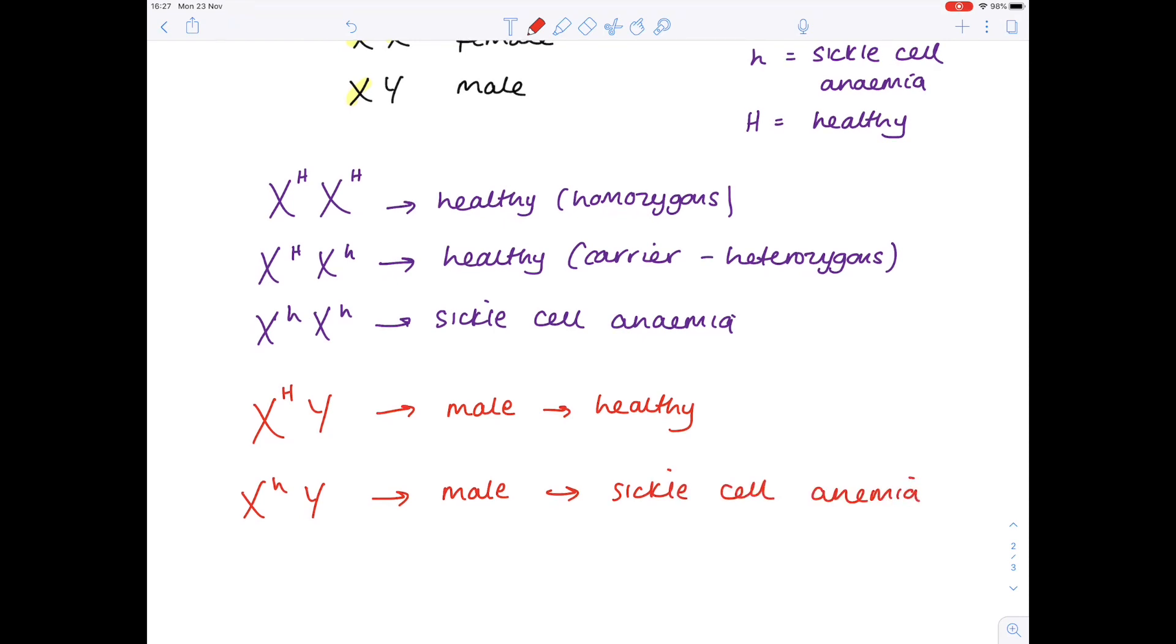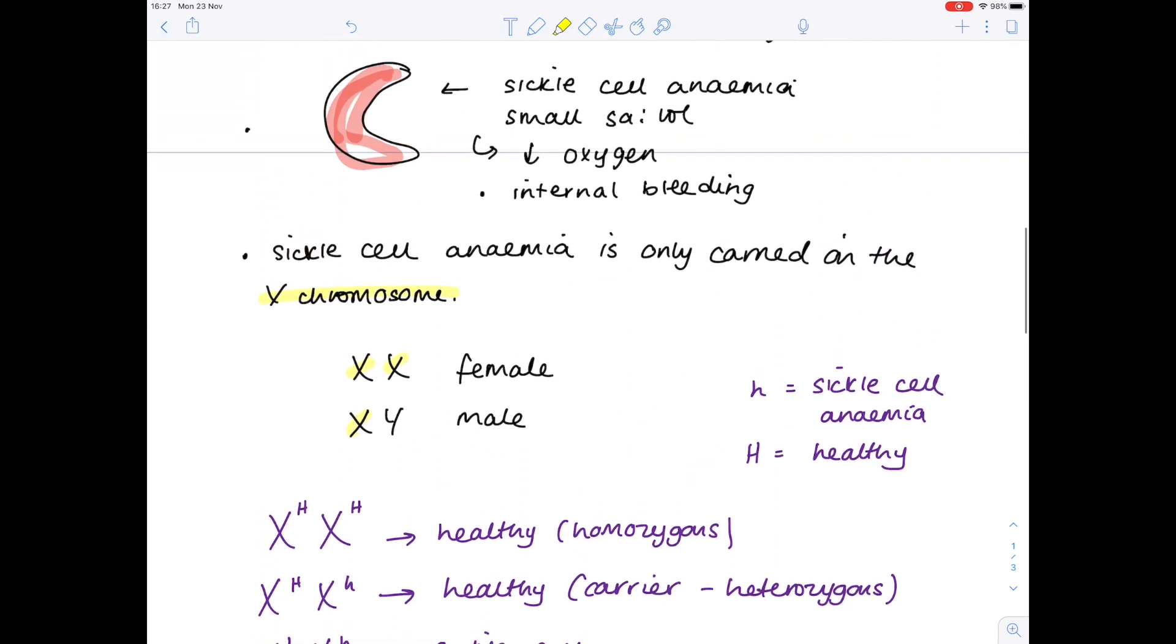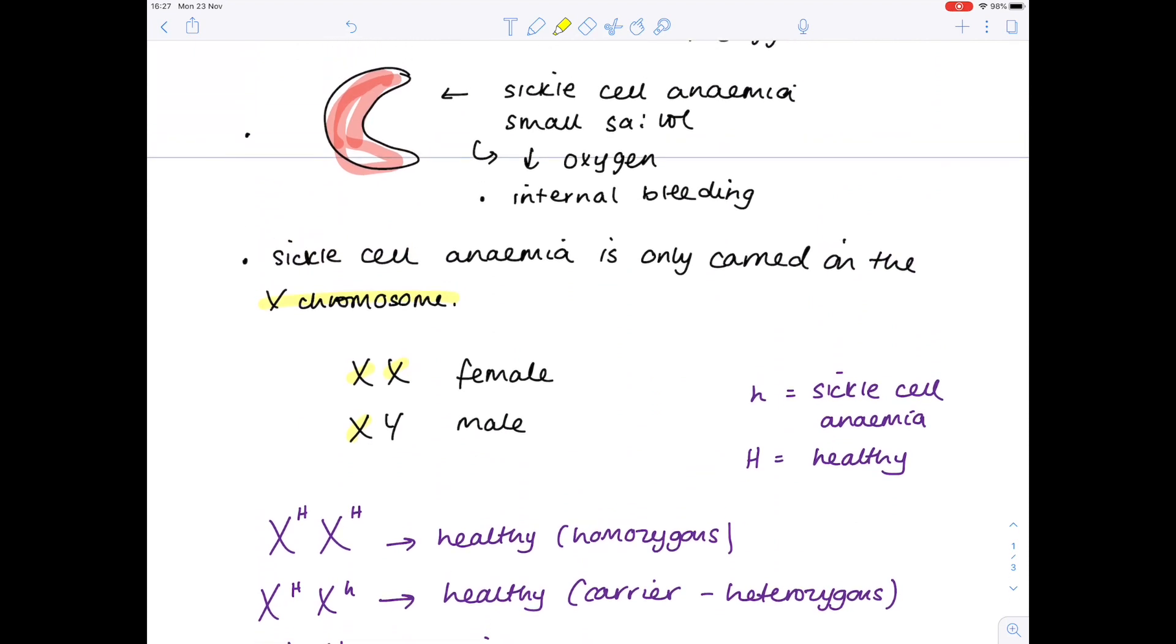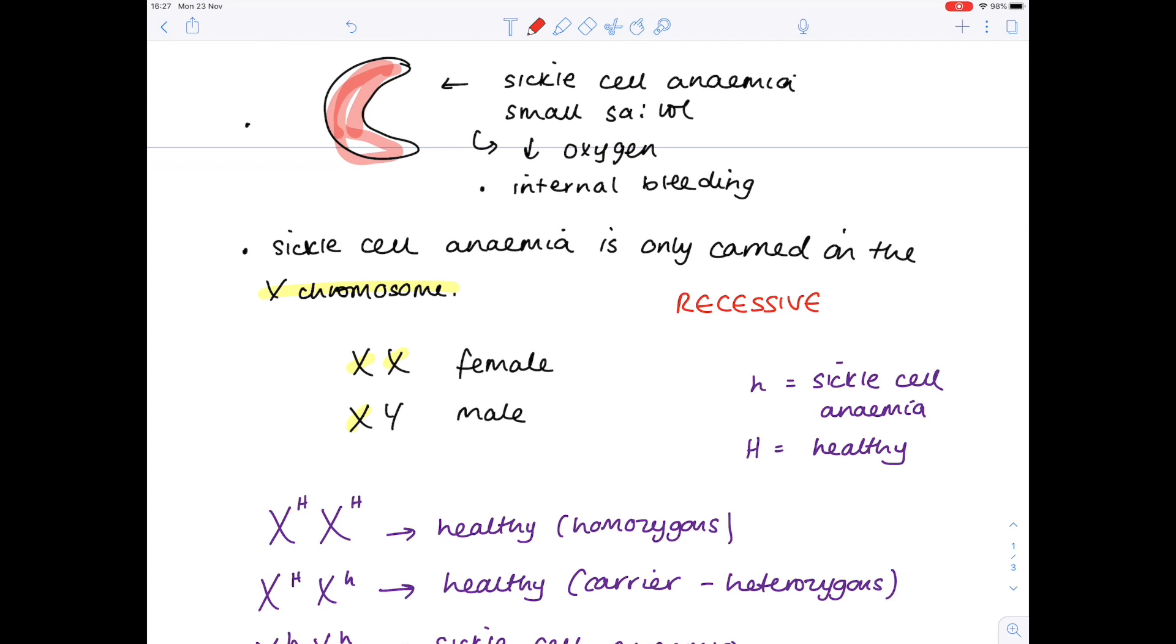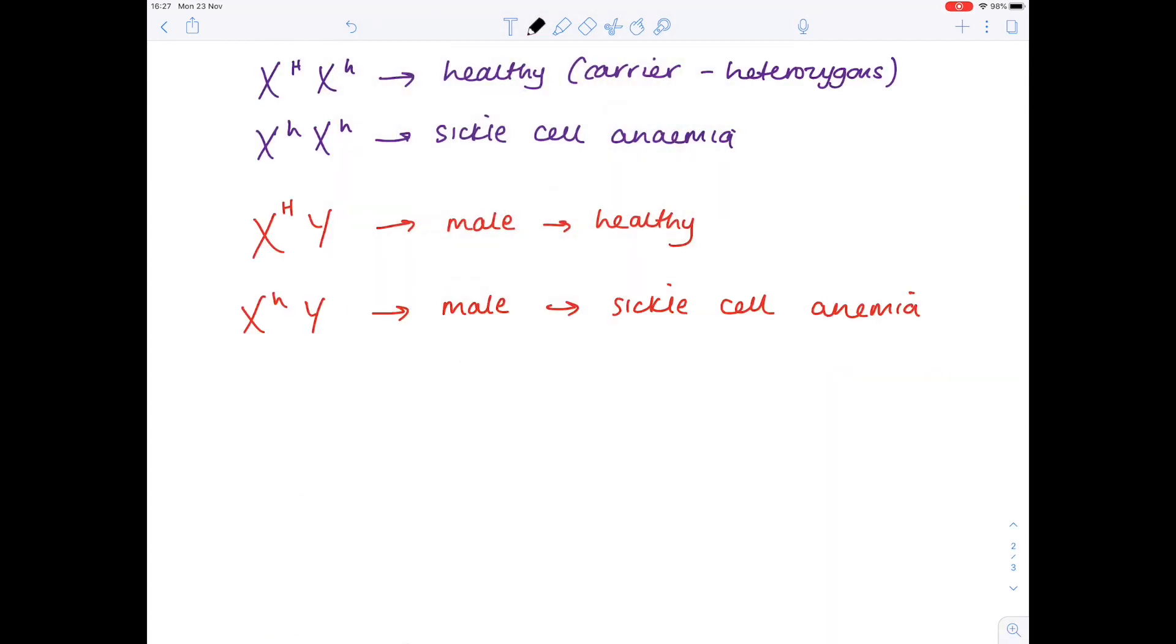So the things I really want to point out to you at this point is, remember that sickle cell anemia is carried by that X chromosome. You must remember that it is a recessive disease and that it's a disease of the blood which lowers the oxygen carrying capacity. Now we're ready to do some genetic crosses to work out the chances of a child having sickle cell anemia.